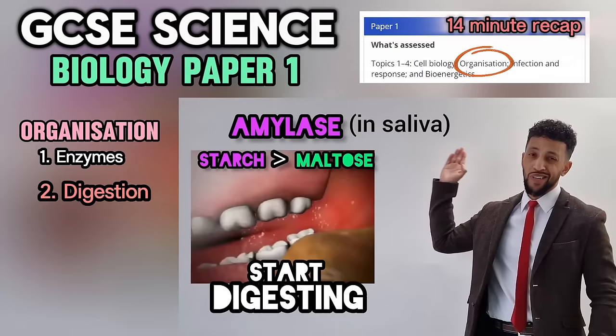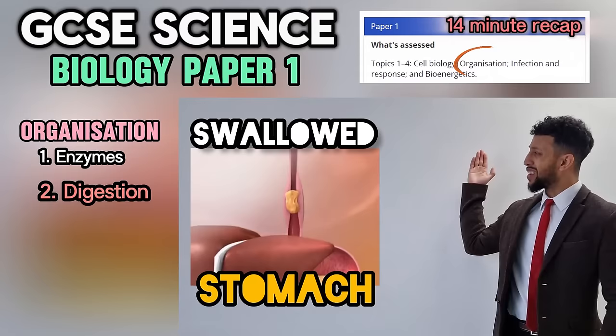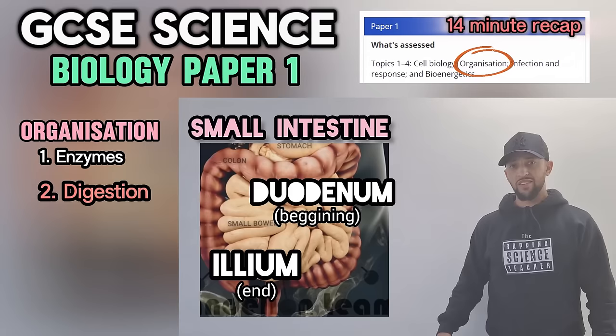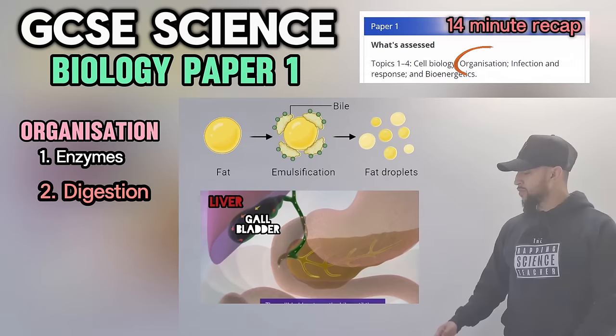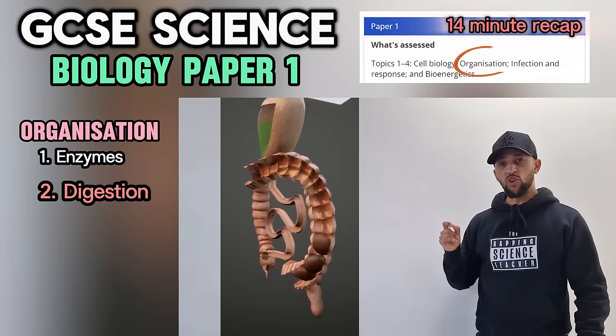The oesophagus takes the food down into the stomach, where hydrochloric acid gets to work. The small intestine comes next — its job is to absorb. Food molecules pass to the villi. Duodenum first, then ileum. The liver makes bile to break down fats — we call that emulsification. The gallbladder stores bile and releases it into the duodenum. The pancreas makes digestive enzymes. Water is absorbed in the large intestine.